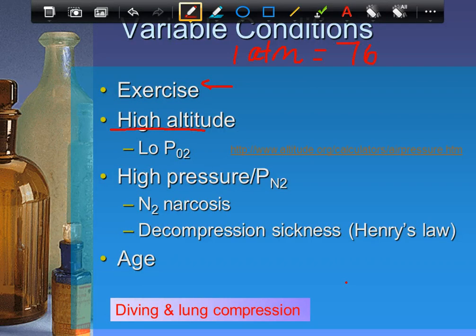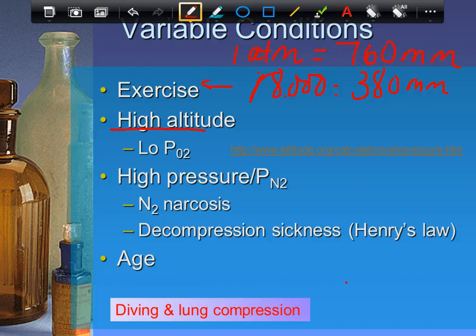At sea level, atmospheric pressure is 760 mmHg. At 18,000 feet altitude, you're at half an atmosphere — 380 mmHg, half of sea level. The problem is that the greater the partial pressure gradient between the atmosphere and your body, the better the diffusion. When atmospheric pressure drops, you have less of a gradient, and gas exchange becomes impaired.